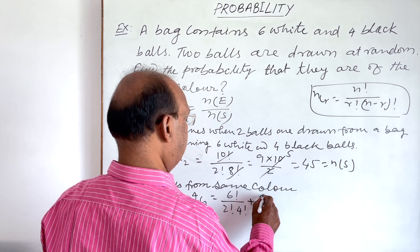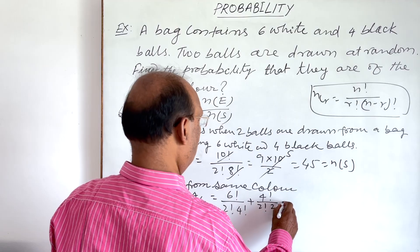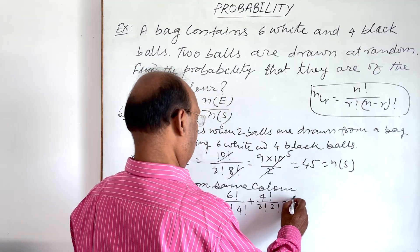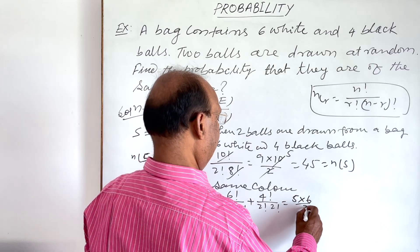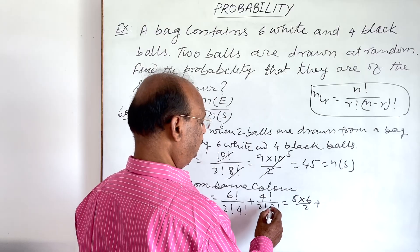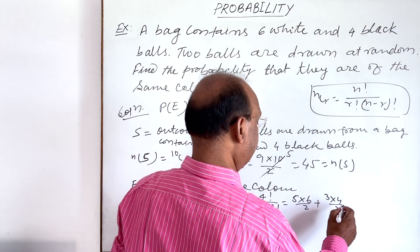So here, first term will be five into six divided by two, and this will be three into four divided by two.